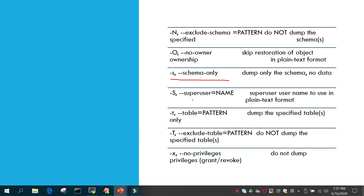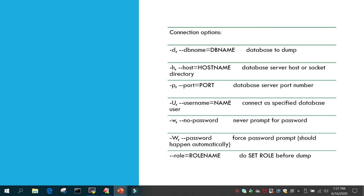The -s option takes the backup of the schema only with no data, while -a is just for the data. The -S option lets you mention the superuser name to be used in plain text format. You can dump a specific table using --table and mention the table name or a pattern. You can also use --exclude-table to exclude backup of particular tables, for example tables starting with a certain prefix. To exclude privileges, use -x, which skips backup of GRANTs and REVOKEs.